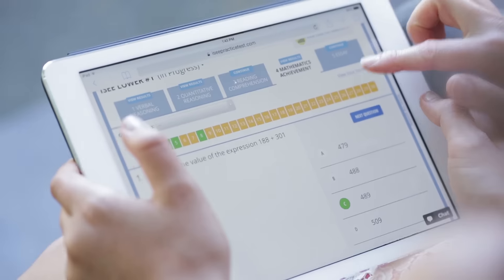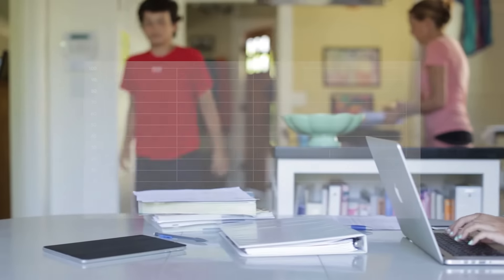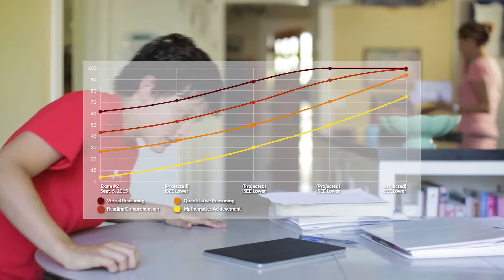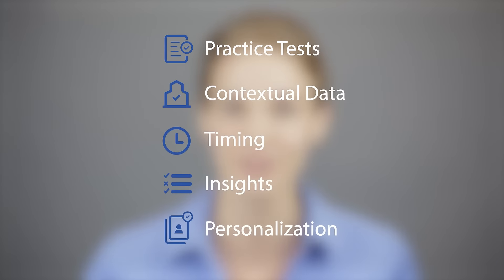Start with a full-length practice test and get immediate scoring and actionable insights. Based on your practice test results and our data on admissions to your target schools, the Test Innovators platform delivers a personalized prep plan designed to help you reach your ISEE goals.